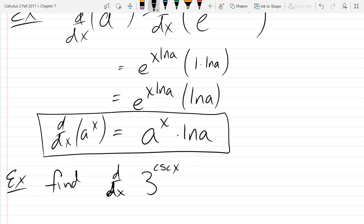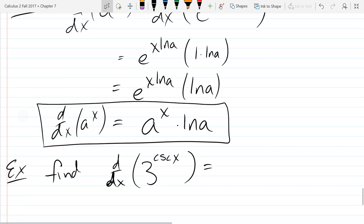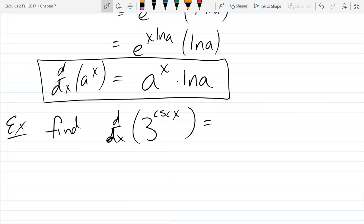So we're just going to rewrite it. Now find the derivative of base 3 to the cosecant of x power. So there's definitely a chain rule in here. And you're going to use that derivative formula right there on the board.